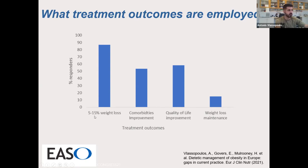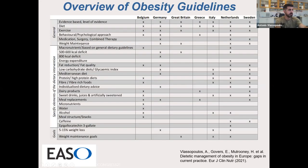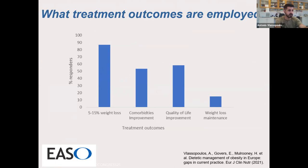About half of respondents mentioned that they actually measured the improvement of obesity comorbidities as an outcome in their interventions. Many were concerned about quality of life and tried to measure quality of life improvements, but very few — less than fifteen percent — mentioned that they are actively engaged in weight loss maintenance. If we go back, weight loss maintenance was not mentioned much in any of the guidelines, so it doesn't come as a big surprise that dietitians are focused more on the active weight loss phase, but not on the maintenance side.